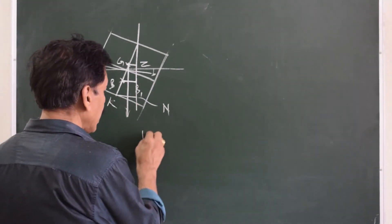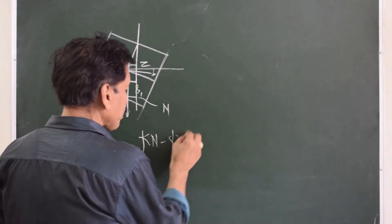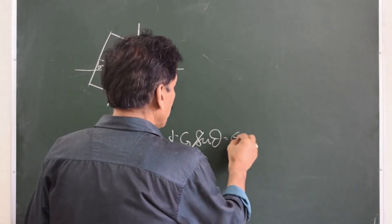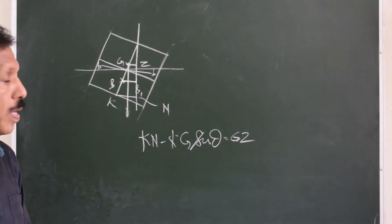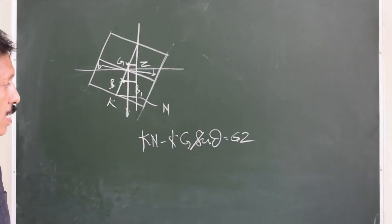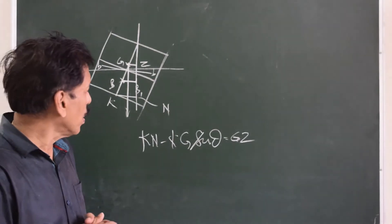KN minus KG sin theta gives you GZ. So this is how we get GZ data for large angles of heel or any angle of heel.